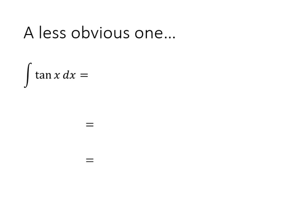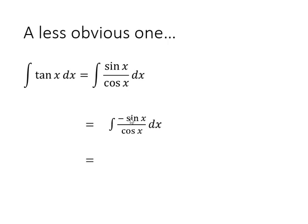I want to look at a slightly less obvious one: the integral of tan(x). We know tan(x) can be written as sin(x)/cos(x). Looking at this, you might spot that the numerator is close to the derivative of the denominator — the derivative of cos(x) is −sin(x), so it's not quite right. We rewrite it with −sin(x) at the top and put a negative out the front. This inner integral is ln of the denominator, so the integral of tan(x) is −ln|cos(x)| + c. This result is given in the formula book.